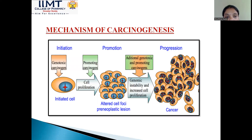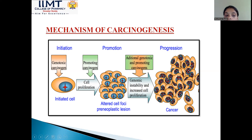What is the mechanism of carcinogenesis? It occurs in three steps. First is initiation, second is promotion, and third is progression. In initiation, some carcinogens initiate the cell. This cell is then promoted to alter its nuclei, and this alteration results in the proliferation of cells to pre-neoplastic lesions. The carcinogen promotes cell proliferation — this step is known as promotion. After that, the cell progresses into several cancerous cells forming a tumour, due to additional genotoxic and promoting carcinogens which lead to genomic instability and increased proliferation.